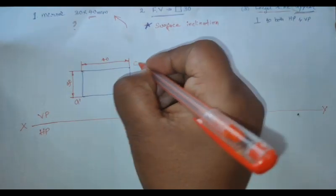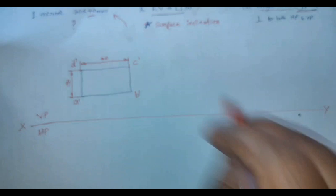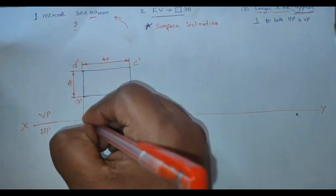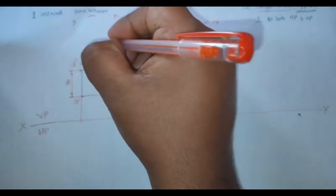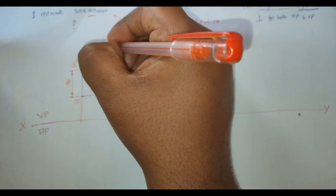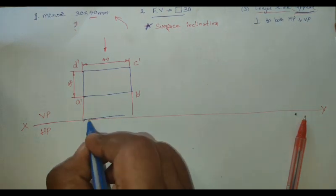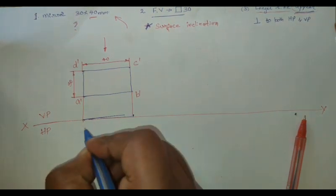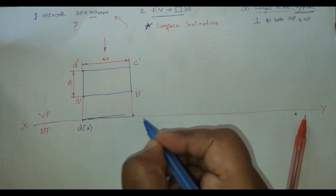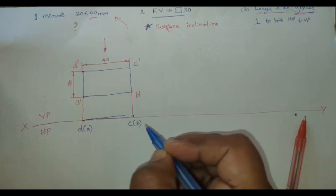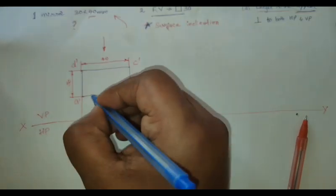Then we shall project it downwards. In top it is going to be line view, as you understood the concept. Here we are going to draw it in thick lines. D is seen, A is not seen, C is seen, B is not seen. So this is step one, this is step two in stage one.